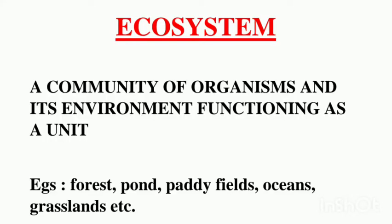You know what an ecosystem is and examples for ecosystems. What is an ecosystem? It is a community of organisms and its environment functioning as a unit — a group of organisms in the environment forming a single unit. Examples are forests, pond, paddy fields, ocean, grassland, etc.